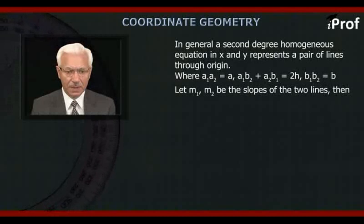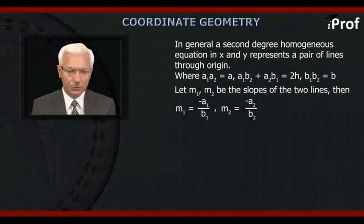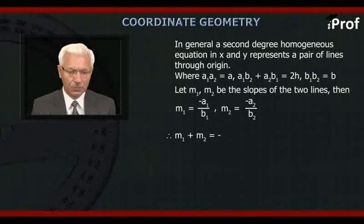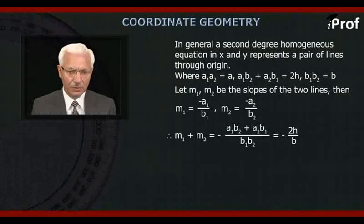Then m₁ will be equal to -a₁/b₁, m₂ will be equal to -a₂/b₂. Now sum of slopes, that is m₁ + m₂, will be equal to -(a₁b₂ + a₂b₁)/(b₁b₂), which is -2H/B.